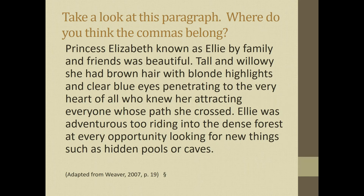So when you look at this paragraph, it's just a bunch of words here. Princess Elizabeth, known as Ellie by family and friends, was beautiful. Tall and willowy, she had brown hair with blonde highlights and clear blue eyes, penetrating to the very heart of all who knew her, attracting everyone whose path she crossed. Ellie was adventurous too, riding into the dense forest at every opportunity to look for new things such as hidden pools or caves. So without the commas, I'm not quite sure where to pause for the different phrases.